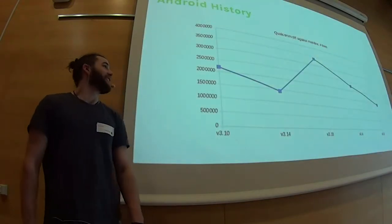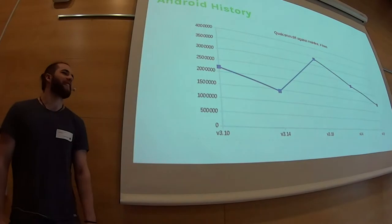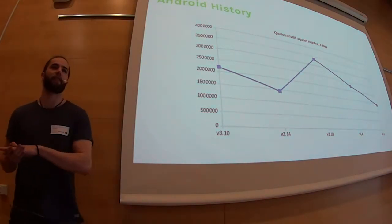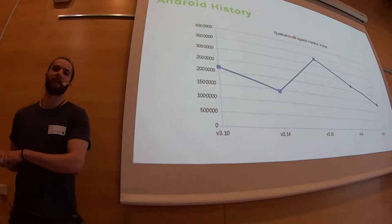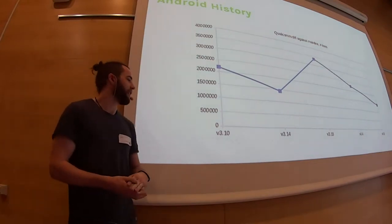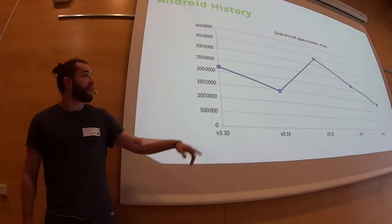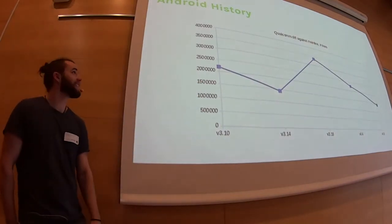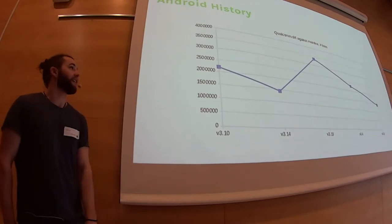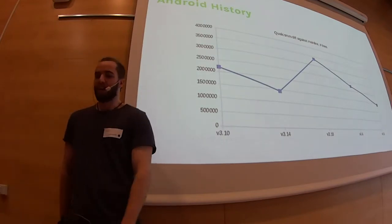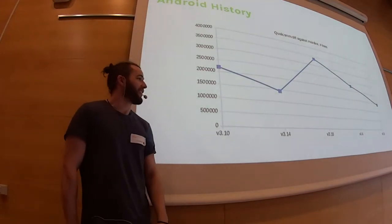This is an interesting graph. It shows the number of lines of diff from the mainline kernel to various equivalent Qualcomm kernels — around two and a half million lines, which is a lot.